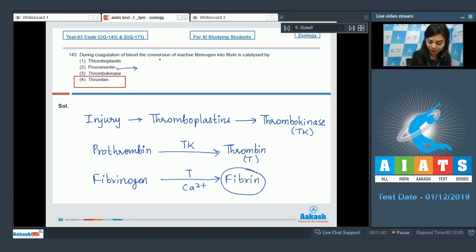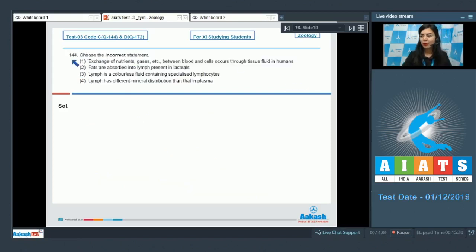Whereas proconvertin is clotting factor 7. Answer here is 4. Question number 144: Choose the incorrect statement. Let's go over them one by one.